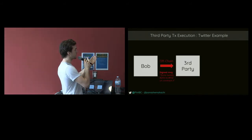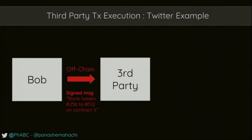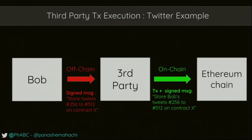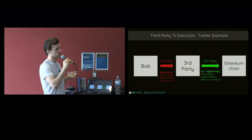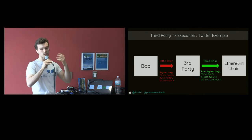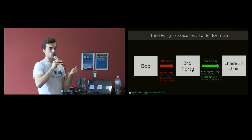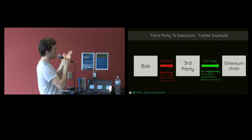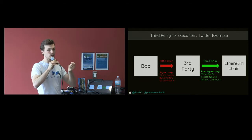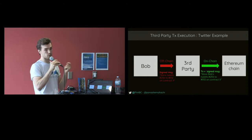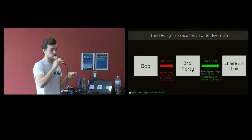So you could have Bob store tweets on a decentralized Twitter contract, and the third party — the party that makes profit from you utilizing this network — says I'm going to pay for you. Facebook generates a huge amount of money, but there's a cost for every user — pictures, messages, users — Facebook pays all these costs, and these costs are hidden to the users. The decentralized Facebook could say: the people that make the profit should take on the cost of the users. So users could interact directly with the blockchain, never having a single Ether in their account, because the people generating profit from these decentralized applications are paying the users' transactions. And I think that's really powerful.